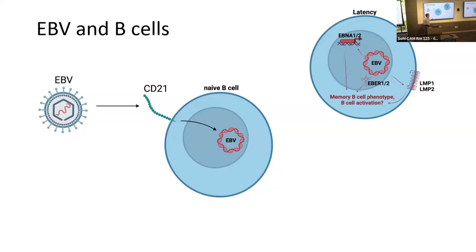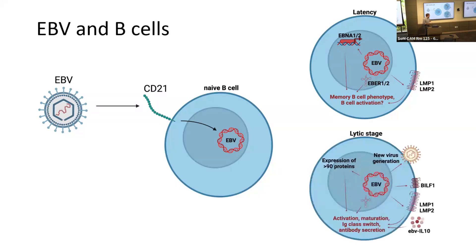At some point the virus enters into a lytic stage. Here you get an explosion in viral protein expression, generation of new viral particles, and spread of virus to other B-cells.